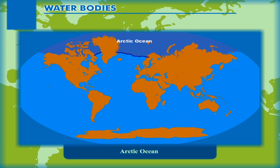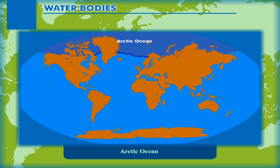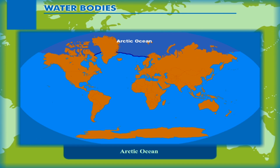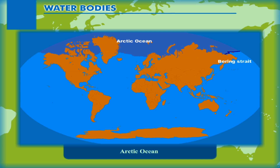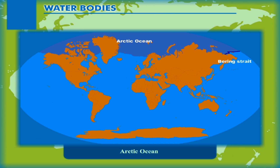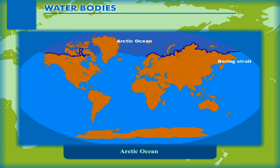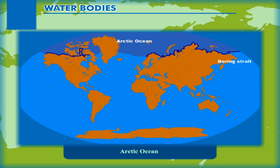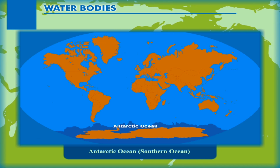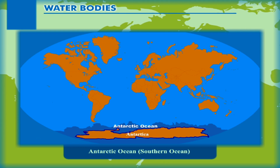Arctic Ocean: It surrounds the North Pole within the Arctic Circle. It is actually the northern extension of the Atlantic Ocean. It is connected with the Pacific Ocean by a narrow stretch of shallow water known as the Bering Strait. It largely remains frozen with thick sheets of ice. It is bounded by the northern coasts of North America and Eurasia.